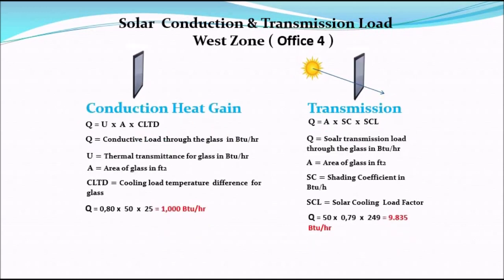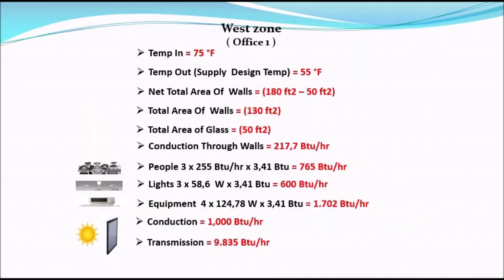For the west zone offices — number two, three, and four — and the east zone, we use the same formulas to determine the conduction and transmission loads in the same way as we did for office number one, based on the R-value, U-value, shading coefficient, and orientation. The next step is to select the outdoor and indoor design temperatures. In this example, the indoor design temperature is 75°F and the supply air design temperature is 55°F.